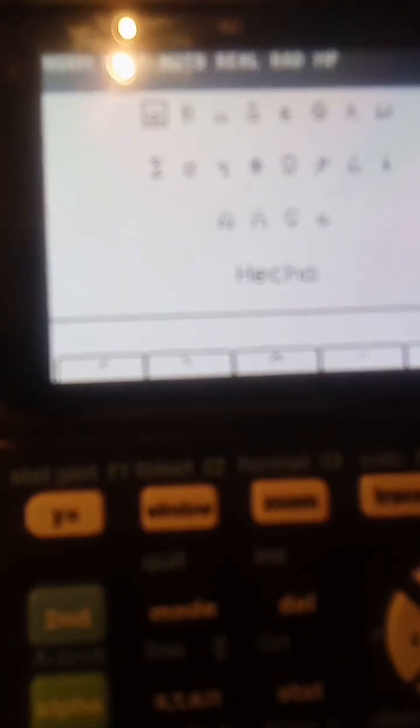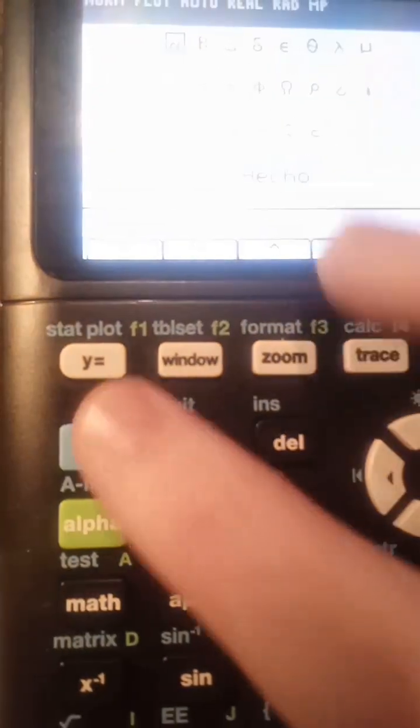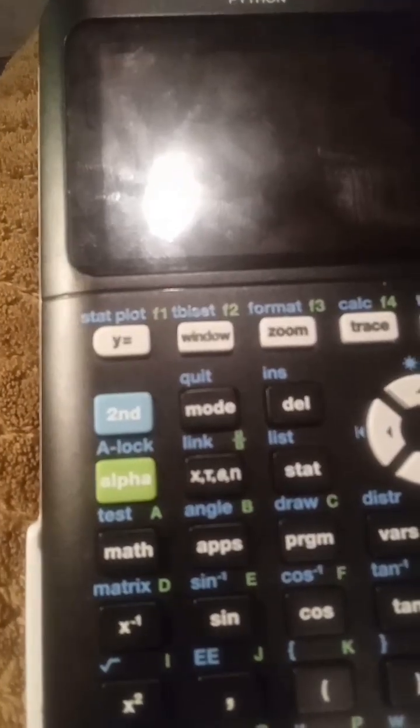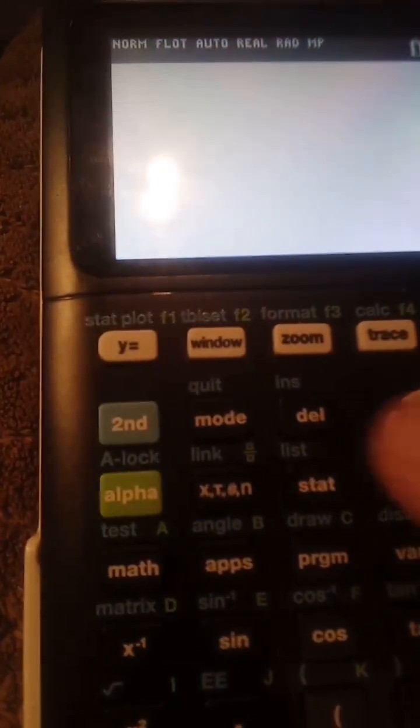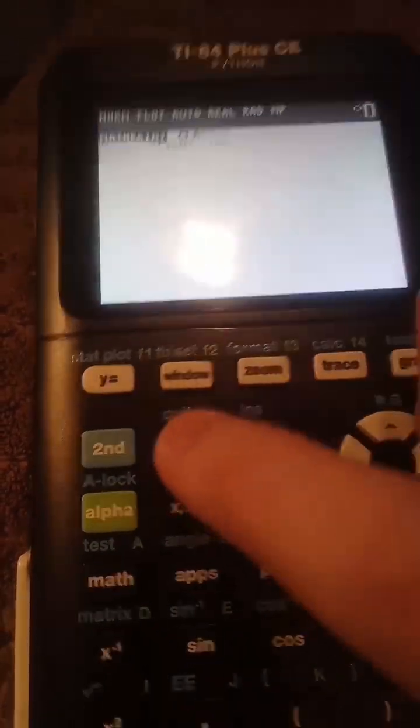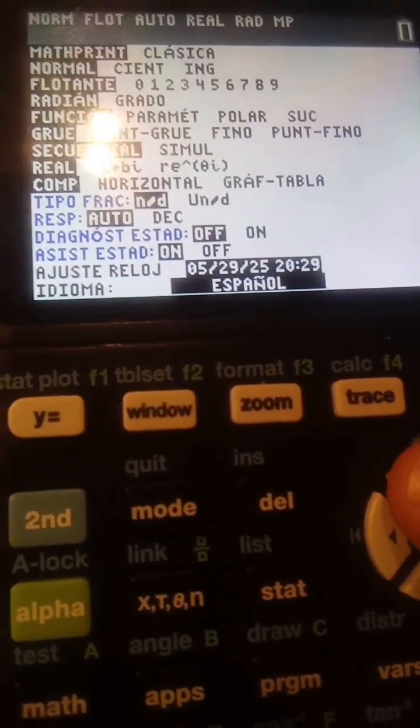Lowercase O. So what you want to do is you want to turn off your calculator, second on. Turn it back on and go to mode, and change that language back to English.